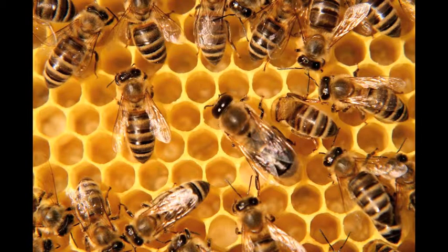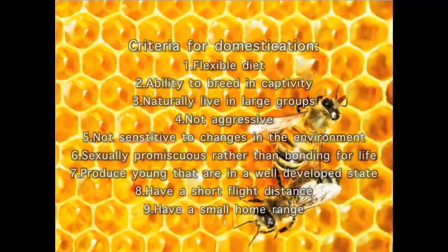Beekeeping is generally considered to be domesticating bees; however, they do not entirely meet the criteria for domestication. The criteria for domestication are: a flexible diet, ability to breed in captivity, naturally living in large groups, not aggressive, not sensitive to changes in the environment, sexually promiscuous rather than bonding for life, producing young in a well-developed state, having a short flight distance, and having a small home range.